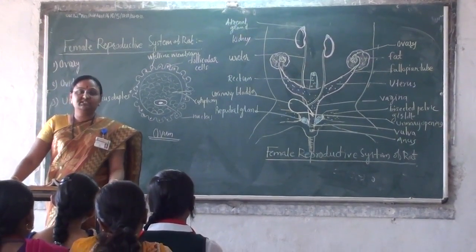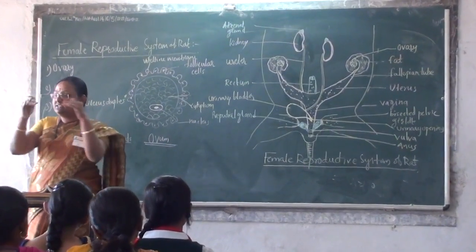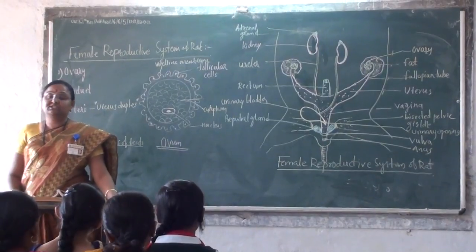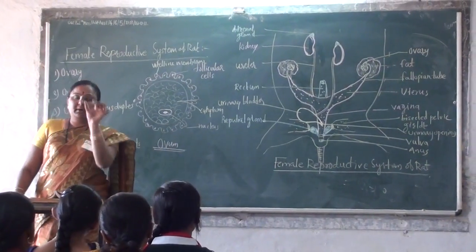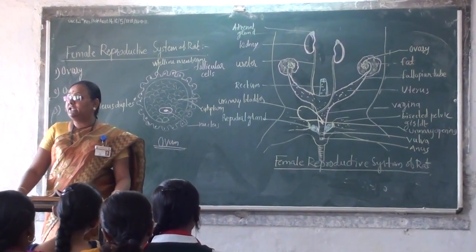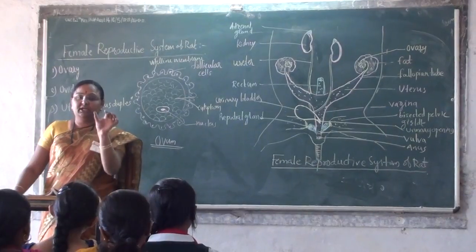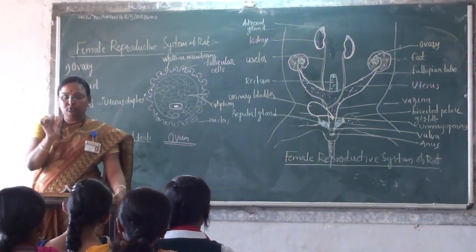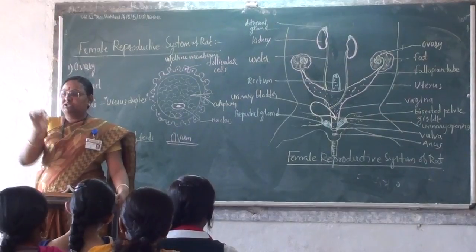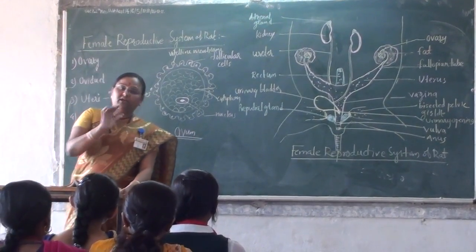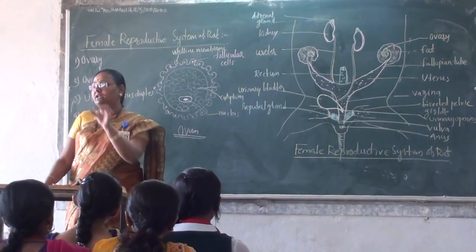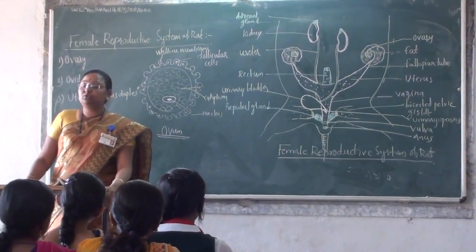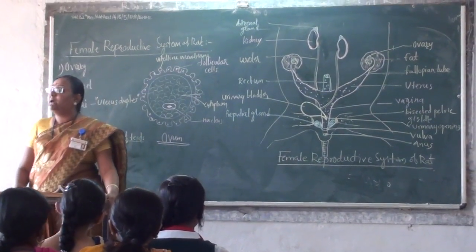What is the vas deferens? The vas deferens connects with the urinary bladder. That is the common passage of urinary and genetic material. That is called the urethra. The urethra leads to the structure of the penis, ending at the glans.